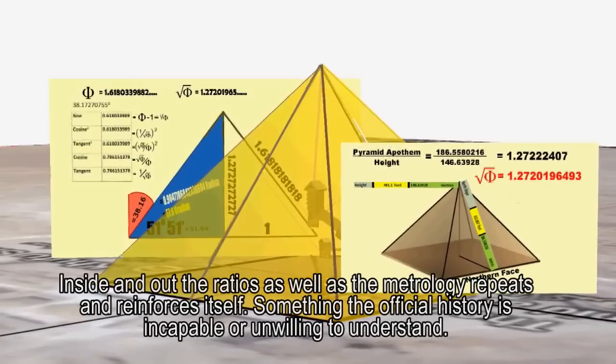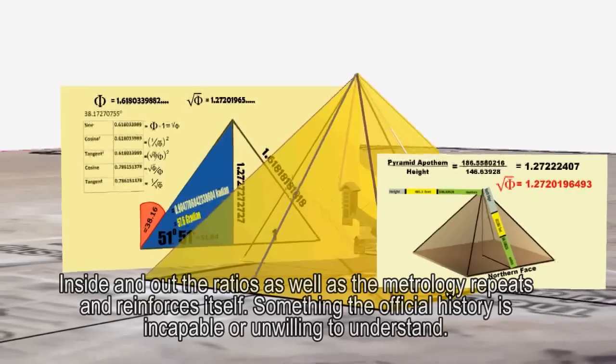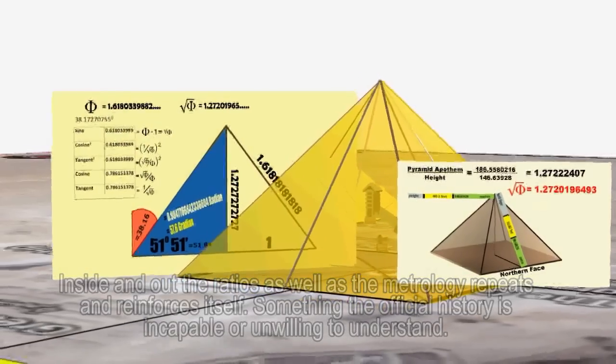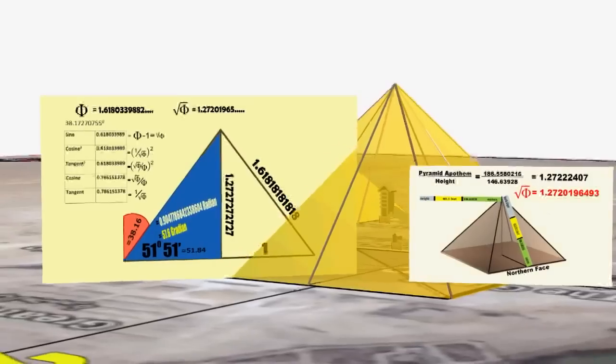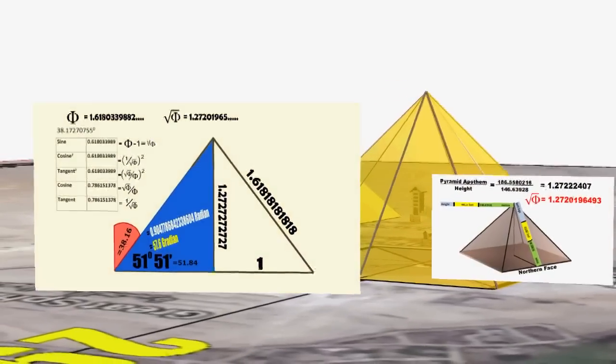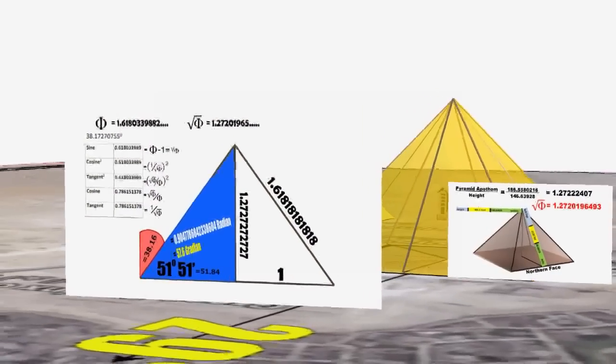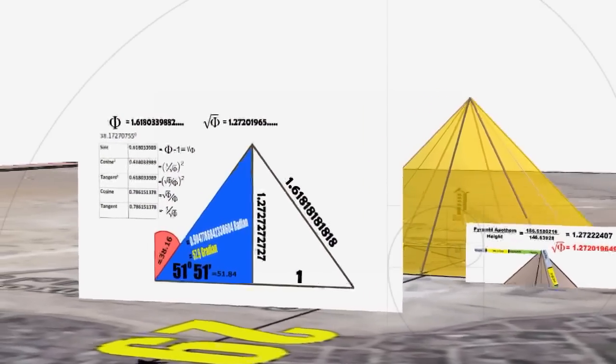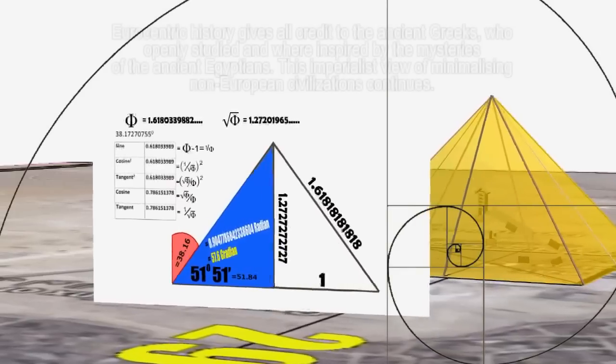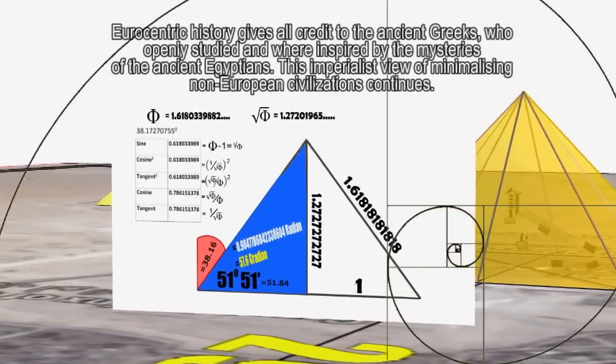All right, we'll start with a one-by-one square, and next to that put another one-by-one square. Together, they form a one-by-two rectangle. Beneath that, I'll put a two-by-two square, and next to that, a three-by-three square. Beneath that, a five-by-five square, and then an eight-by-eight square, creating one giant rectangle, right?